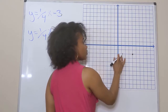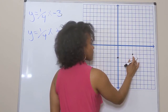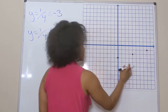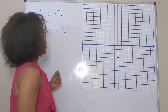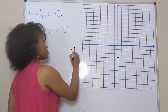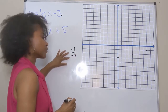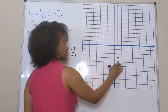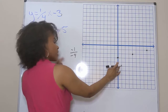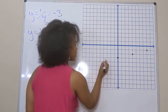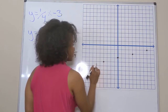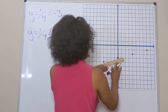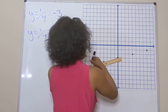From my y-intercept I go up one, over four, then up one, over four again to get more points. To get points on the other side of my y-intercept, since my slope is one-fourth I can use negative one over negative four, which reduces to positive one-fourth. So I go down one and to the left four. Now I have my line — I'll draw it as straight as possible on this large grid.